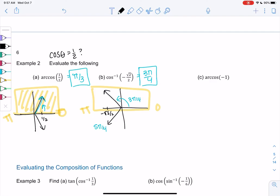And then arccosine of negative 1. So cosine is negative 1 over here, because it's the x value, and that would be π.